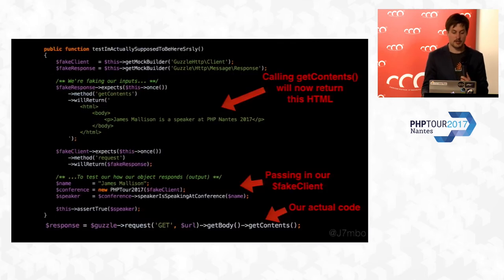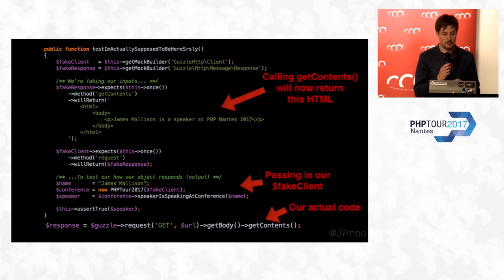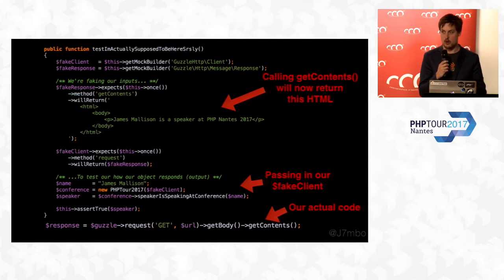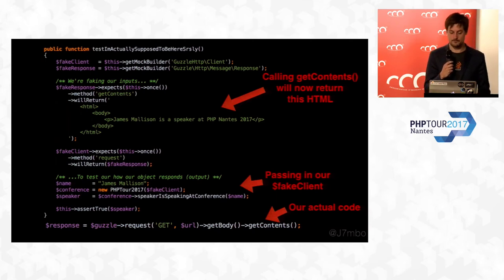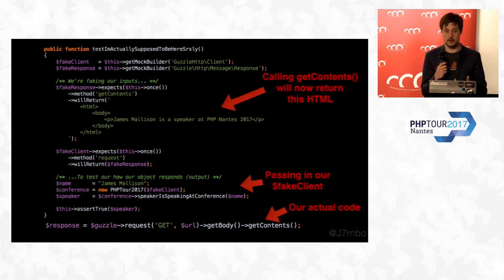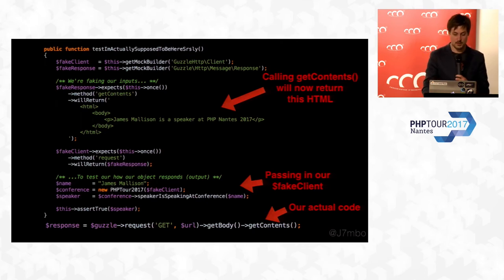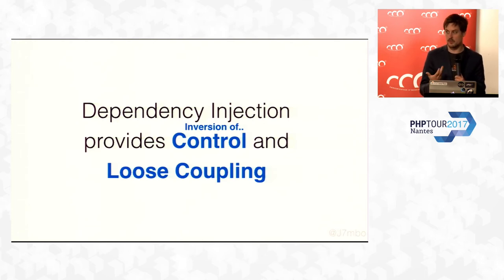Now let's look at what a test could look like. When we call get body get contents, we're saying that Guzzle will return this specific HTML. We pass this fake client to our object instead of the actual HTTP client. Our object calls our fake Guzzle client and receives this controlled response. We assert true that we get back true. This is a positive test with a faked Guzzle response. Dependency injection is all about control — controlling code so control is inverted, and controlling tests so we can fake inputs and get expected outputs.